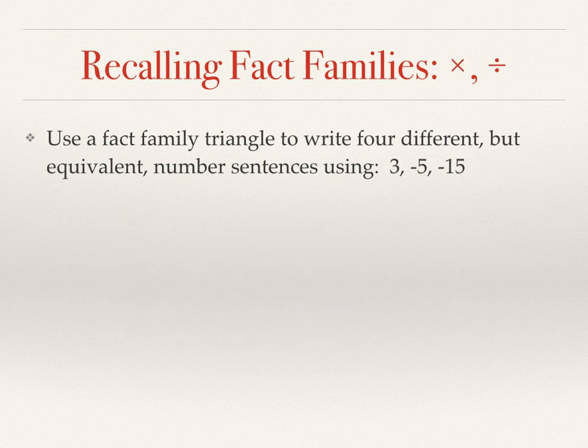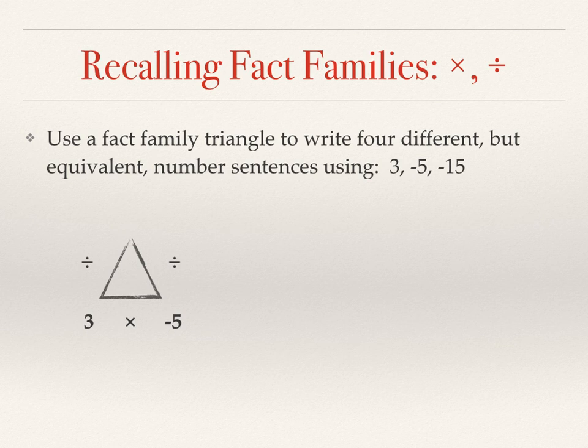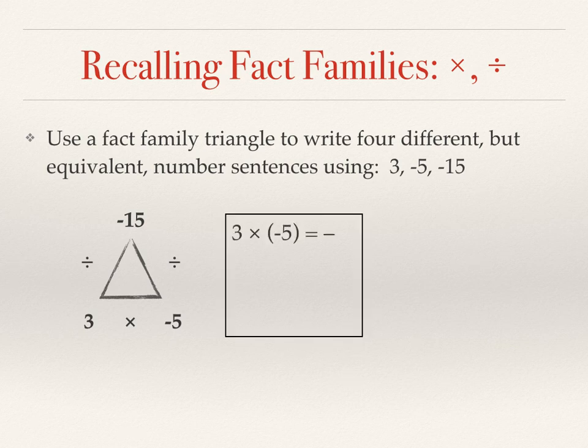So here is another example, but this time we're going to need to use multiplication and division. So the multiplication goes at the bottom and the division goes along the sides. 3 and negative 5 go along the bottom. And the negative 15 goes at the top. And our four equations: 3 times negative 5 equals negative 15, etc.